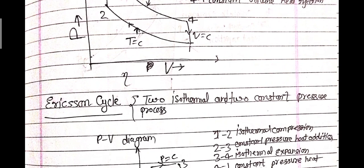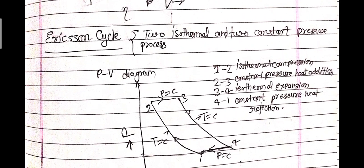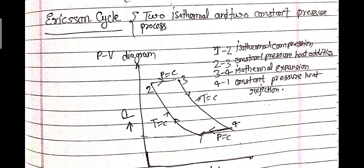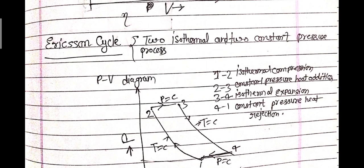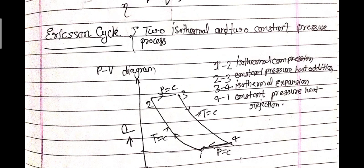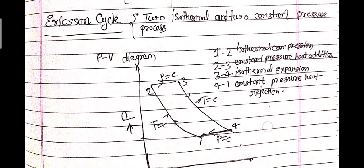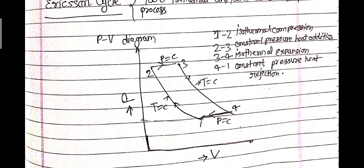The Ericsson cycle has two isothermal and two constant pressure processes, as shown in the PV diagram. Process 1 to 2: isothermal compression. Process 2 to 3: constant pressure heat addition. Process 3 to 4: isothermal expansion. Process 4 to 1: constant pressure heat rejection.